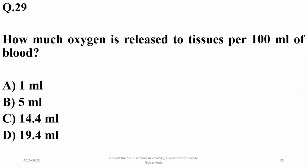Question twenty-six: in blood cells, the amount of oxygen released to tissues per 100 ml of blood is 5 ml, because there is approximately a 5 ml difference between deoxygenated and oxygenated blood.